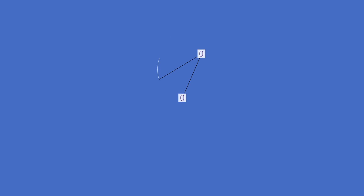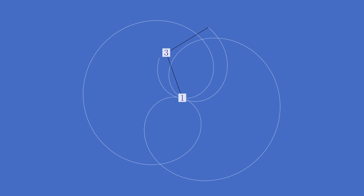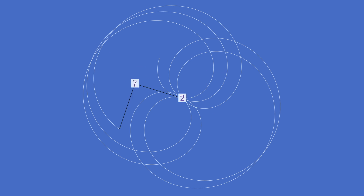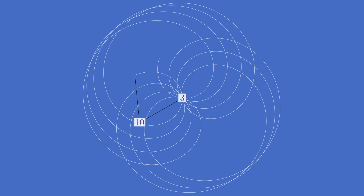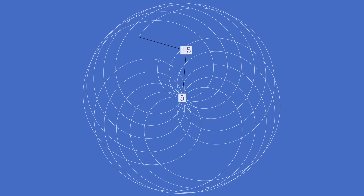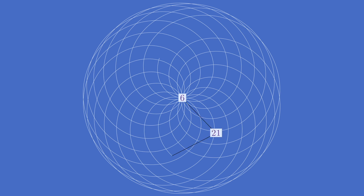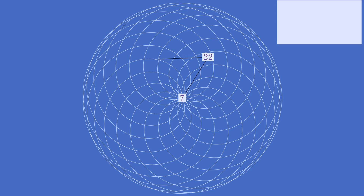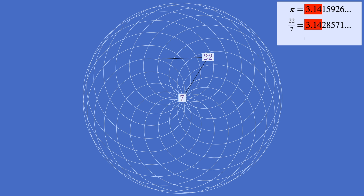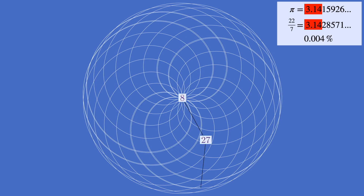Let's add rotation counters to the animation and see where we are when the pattern almost repeats. Our first close call is at 22 and 7, meaning 22 over 7 is a pretty good approximation of pi. In fact, it's off by only 0.004%, which is remarkably close for a ratio with such a small denominator.